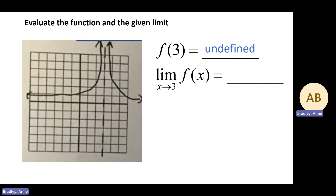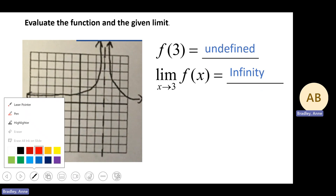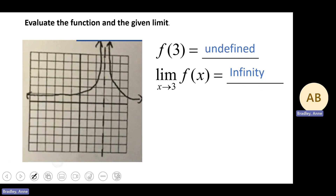Now let's evaluate the limit as x approaches 3. As we approach 3 from the left, it's headed up to positive infinity. And as we approach x equals 3 from the right, it's also headed up to positive infinity. Because these are exactly the same, our answer is positive infinity.